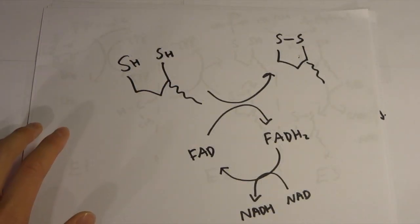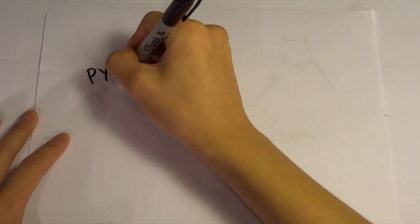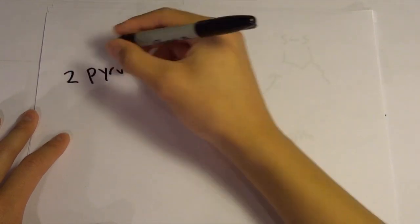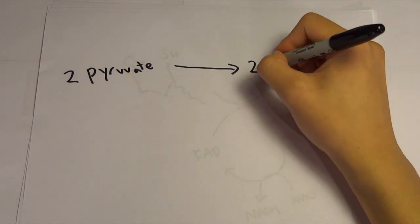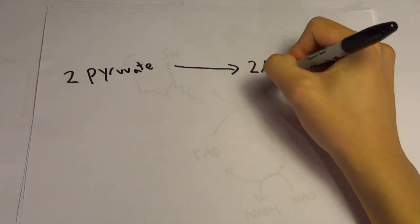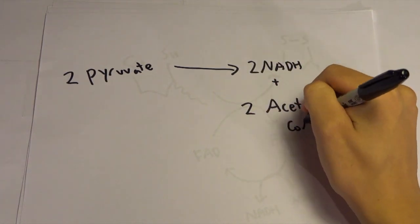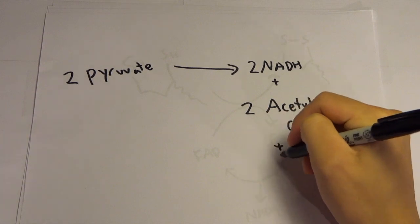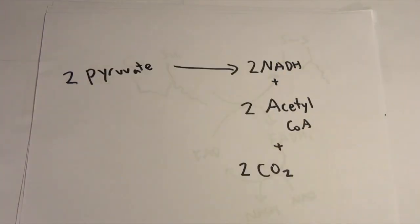The final product before we get out of this. So the pyruvate was our starting product. So we had two pyruvate to begin with. Now we're going to end up with two NADH. And also two acetyl-CoA. Also as a byproduct, we're going to have CO2. And that's two of them just because we had two pyruvate.